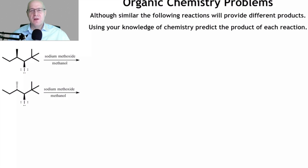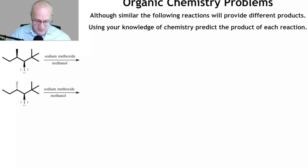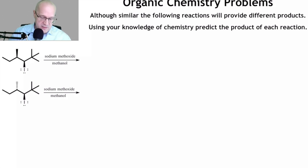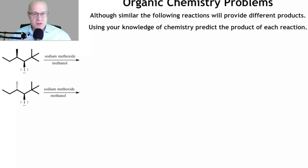Welcome back to another chemistry video. Today we're going to talk about E2 eliminations with stereochemistry — what does stereochemistry have to do with E2 elimination, does it affect it, does it change the outcome? We're dealing with two molecules under the exact same conditions. The first thing to realize is that these two are diastereomers, and diastereomers are different, so they should give you different products. That's what we expect — let's see if we get it.